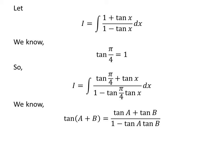We know the trigonometric identity: tan(a + b) = (tan a + tan b) / (1 - tan a · tan b). Applying this identity gives us i is equal to the integral of tan(π/4 + x) with respect to x.